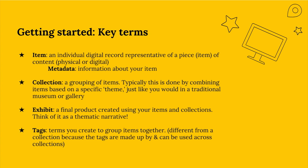The best way to get started on building your Omeka site is to think about its key components. These are, first of all, items — an individual digital representative of a piece of content, which can take the form of something physical or digital. In an Omeka instance, we use metadata, that is, data about data, to describe each item. We can then put all of the items into a collection, grouping them together based on a specific theme, just like you would in a traditional gallery or museum. We then create an exhibit — a final product created using items and collections. Think of an exhibit as a grand thematic narrative. You can also use tags in Omeka to create or group items together.